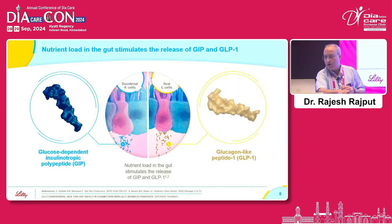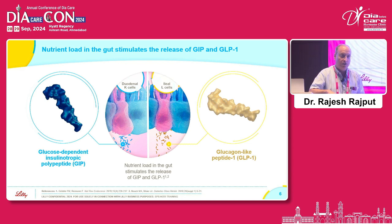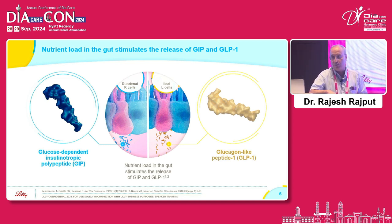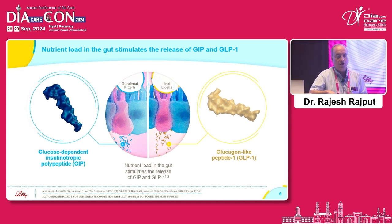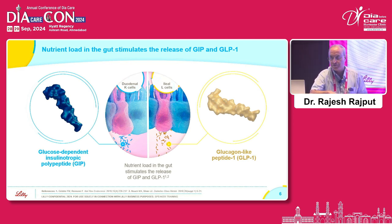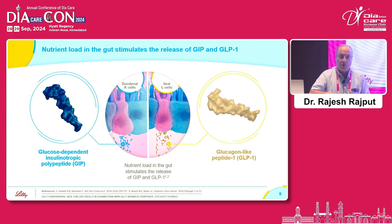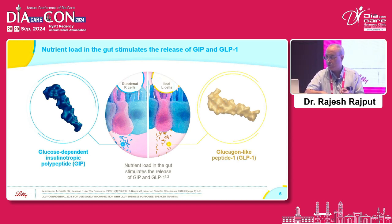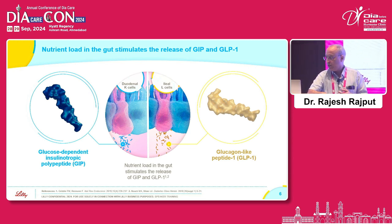Whenever we eat something, whenever we go for lunch, there is a release of a group of hormones from the intestine which are collectively known as incretin hormones. They are responsible for glucose-dependent insulin secretion from the pancreas, apart from other properties. There are two important hormones secreted from the intestine in response to nutrient load: GIP, which is glucose-dependent insulinotropic peptide, and GLP-1, which is glucagon-like peptide 1.